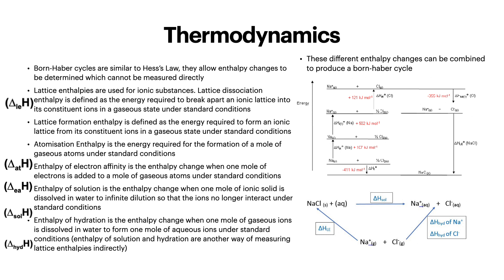There are a lot of different enthalpy definitions — find a way that will help you learn and remember the differences between them, and also the little symbols that go with them. We've got the enthalpy of electron affinity, which is the enthalpy change when one mole of electrons is added to a mole of gaseous atoms under standard conditions. Then we have enthalpy of solution, which is the enthalpy change when one mole of ionic solid is dissolved in water to infinite dilution, so that the ions no longer interact under standard conditions. And finally we have enthalpy of hydration, which is the enthalpy change when one mole of gaseous ions is dissolved in water to form one mole of aqueous ions under standard conditions. Enthalpy of solution and hydration are another way of measuring lattice enthalpies indirectly.